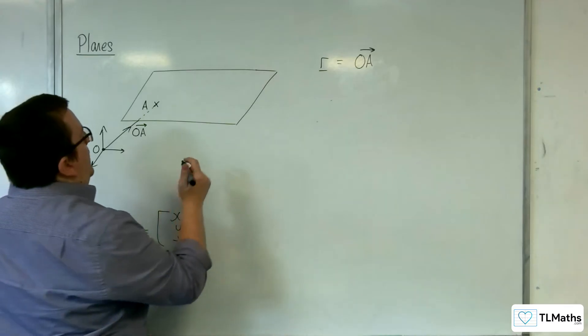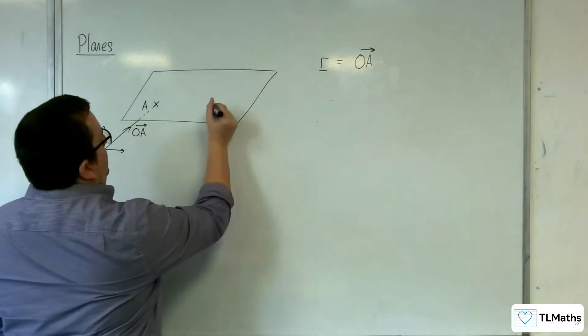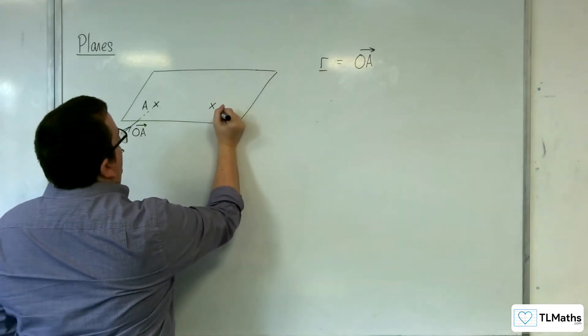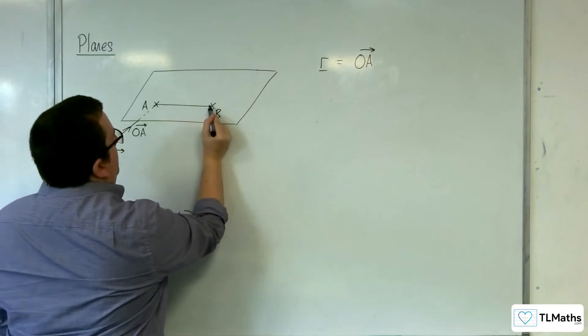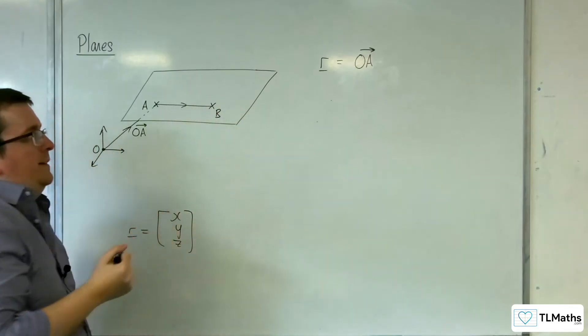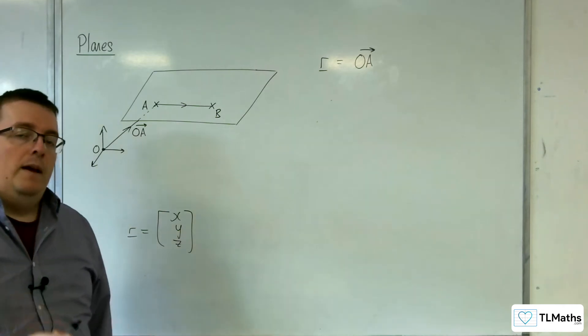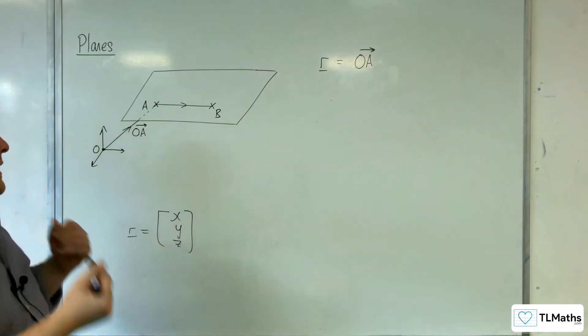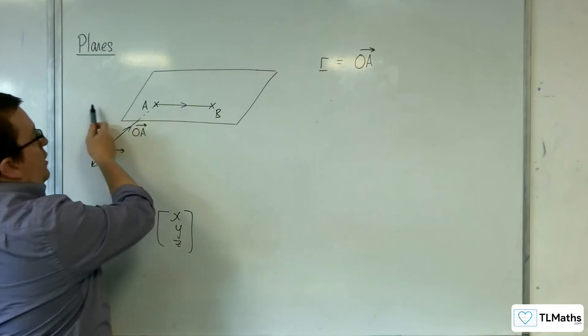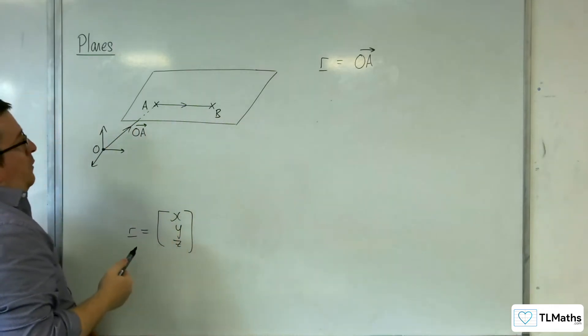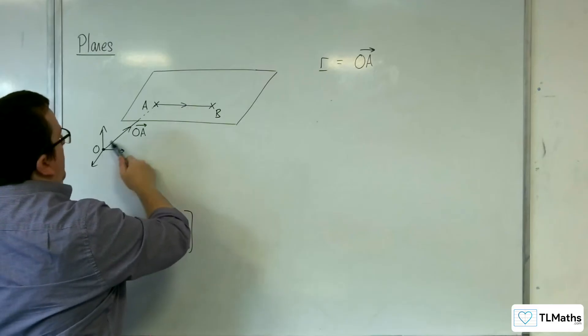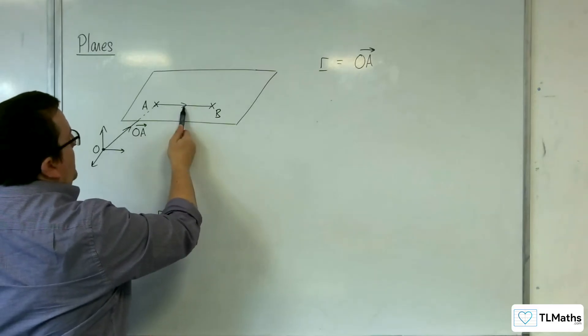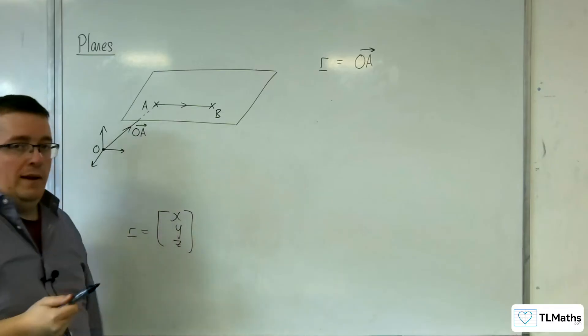So let's say we know another point that is on the plane. Let's say that this is point B. I can work out the direction vector AB, and what that will do is it will allow me to travel along that line. So if I wanted to get to this point, for example, halfway along, I could do OA plus a half of AB and I would get to that point on the plane.